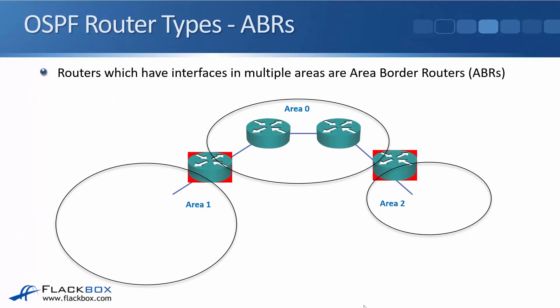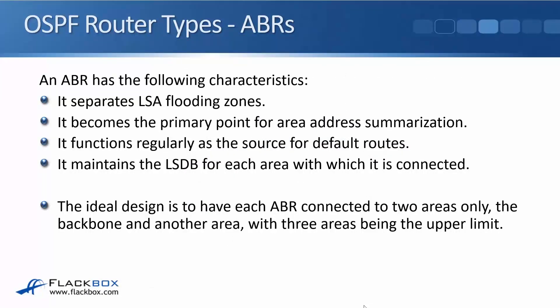The next type of router is the ABR, our area border router. Routers which have interfaces in multiple areas are ABRs. In the example, the highlighted routers have one interface in area zero and another interface in area one or area two. The characteristics of ABRs: they separate the flooding zones, which is what really segregates our network into different areas. So if a link goes up or goes down in that area, it keeps the information just in that one area and doesn't impact other areas.